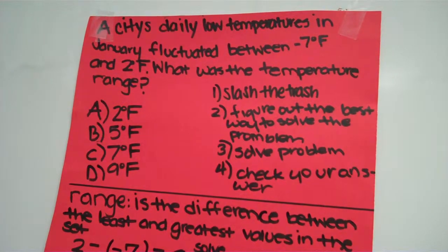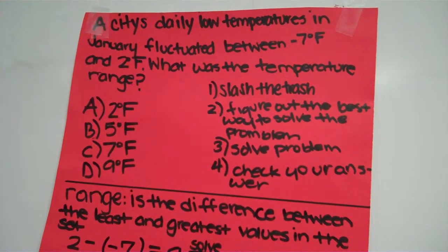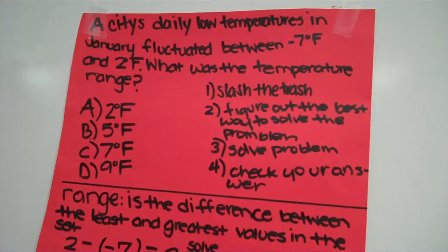A city's daily low temperature in January fluctuated between negative 7 degrees Fahrenheit and 2 degrees Fahrenheit. What was the temperature range?